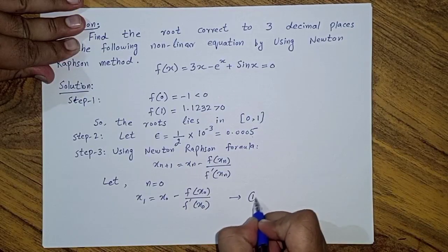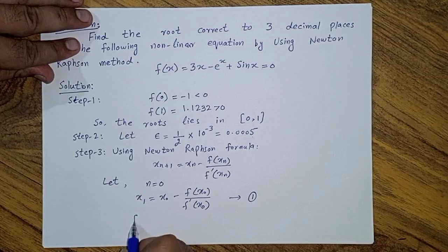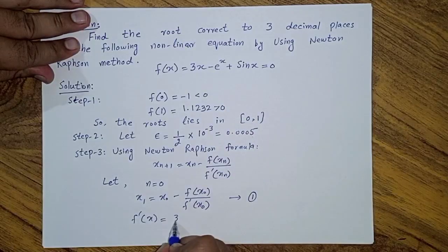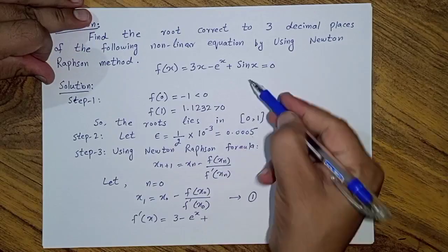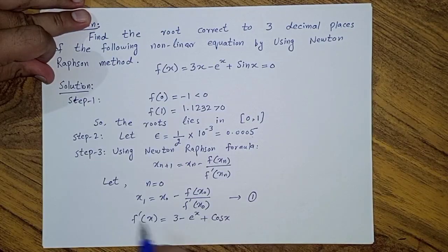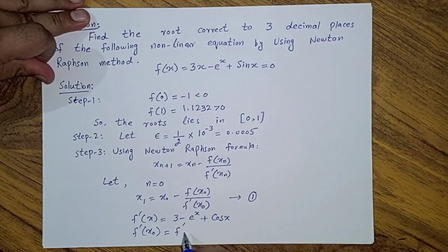Here, f'(x) is the derivative of f(x) = 3x - e^x + sin(x), which gives f'(x) = 3 - e^x + cos(x), since the derivative of sine is cosine.